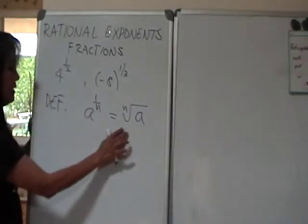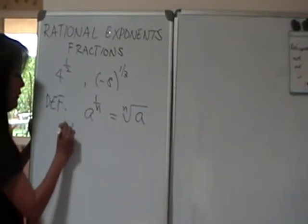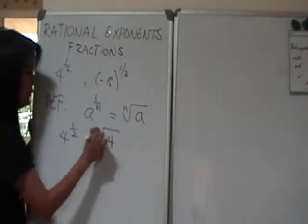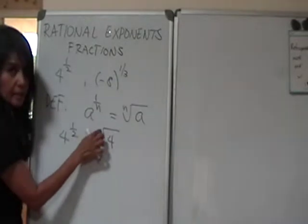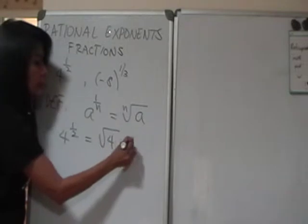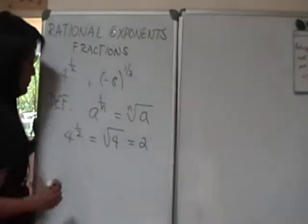So using this definition, let's say if I want 4 to the 1/2, 4 to the 1/2 simply means the square root of 4. So that 2 there becomes that index 2 in our radical. And of course by now we know that the square root of 4 is 2.